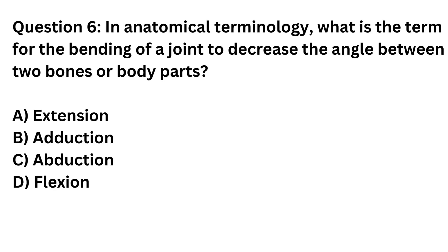Question 6. In anatomical terminology, what is the term for the bending of a joint to decrease the angle between two bones or body parts? A. Extension. B. Adduction. C. Abduction. D. Flexion.